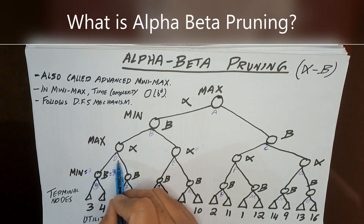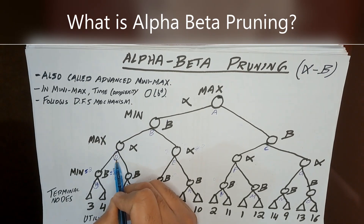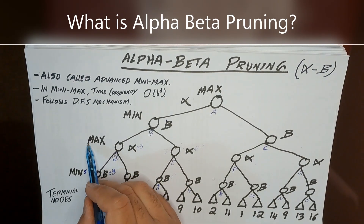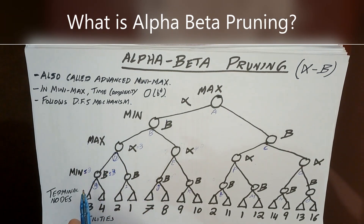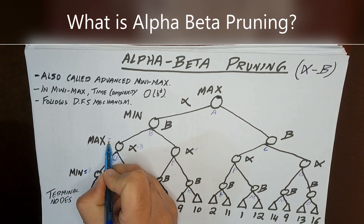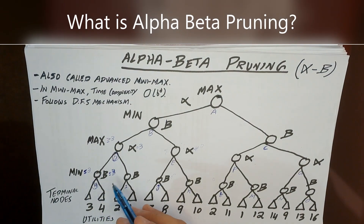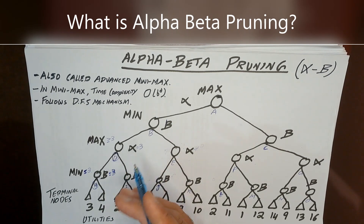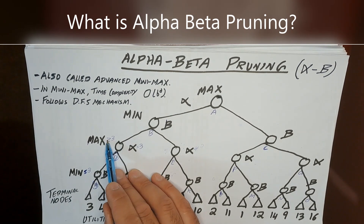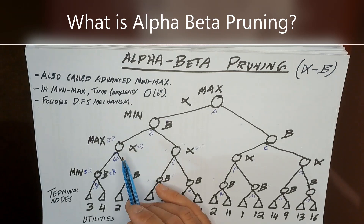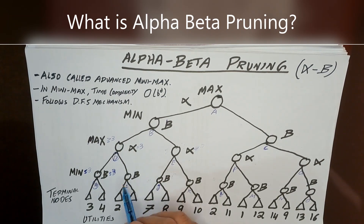At node D, Max is playing. Max always wants to get the maximum reward, so Max's value will be greater than or equal to 3 — it looks for values in ascending order seeking maximum. Max can see it needs a value greater than or equal to 3 from the left-hand side of node D. Now we go to search the other side, which is node I.